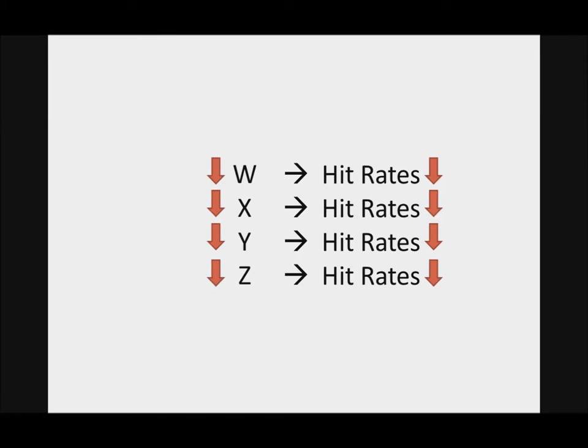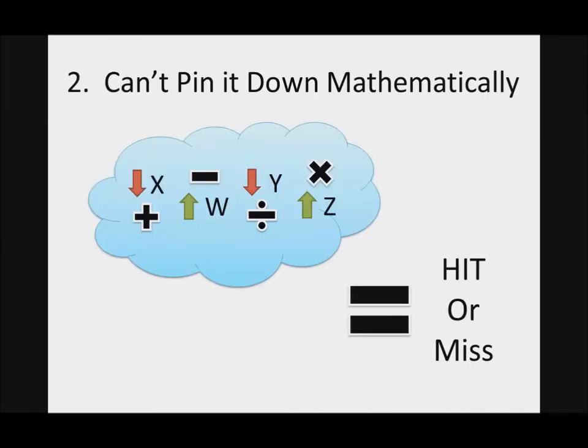So these different variables, the confidence ranking, the disparity, those are all just different variables. So in reality, it's not always clean cut. You'll have a high confidence ranking but you have a low disparity. There is no magical equation that I can tell you, a polynomial equation to the nth degree or something like that, that will tell you it's a hit or a miss. We don't have that equation. So we can't really pin it down mathematically, but we know that there's a pattern.